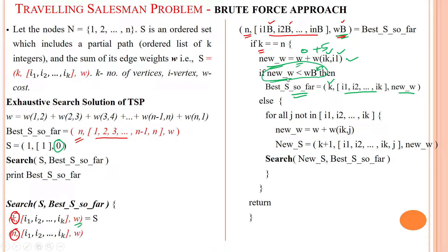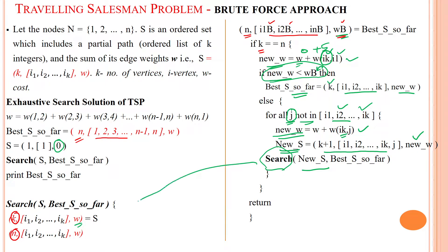If it is not smaller than the best weight, then we check for all J values not in this path — that is, vertices not yet available in the current path. We update the weight reaching from node IK to the next vertex J. We assign the new weight, calculate the new weight by considering the new cities in the path, then that new city is passed into the next recursive call of the search function. We keep doing this again and again until we find the best path.